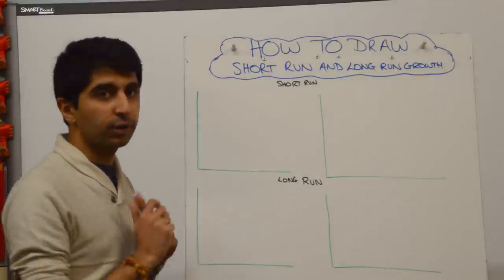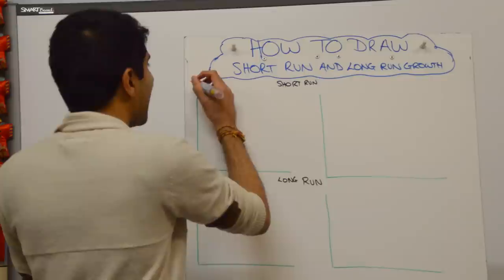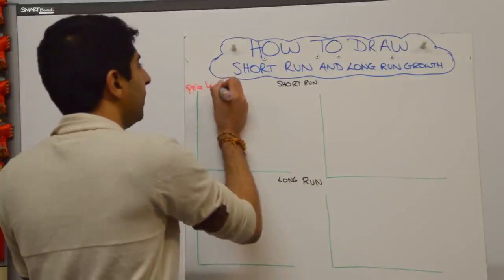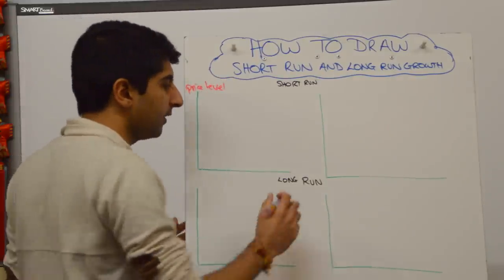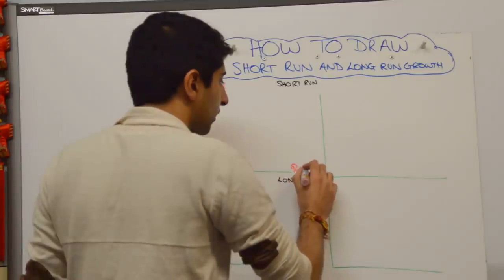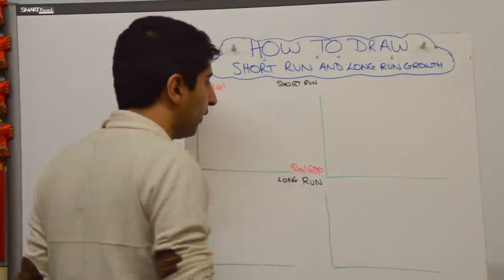Let's have a look at short-run growth first then. Let's do the ADAS model first. We're putting price level on the y-axis and real GDP on the x-axis.